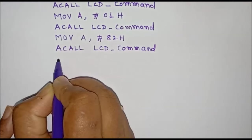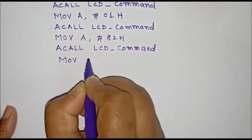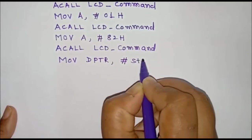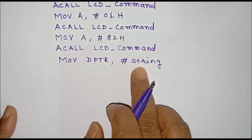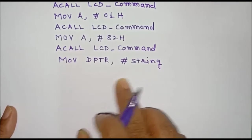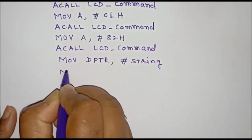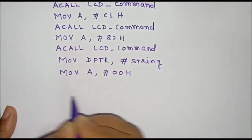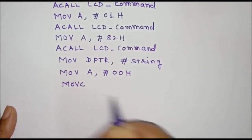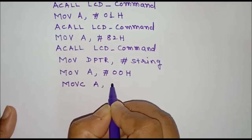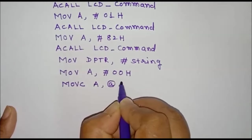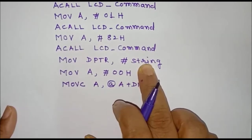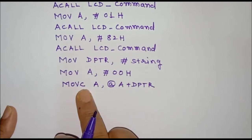To display the string, we first point the DPTR register to the string lookup table. We will give the lookup table the name 'string', so the address of the first character of the string lookup table is stored in the DPTR register. We then initialize the accumulator to 00H and use the MOVC instruction — move data from memory at A plus DPTR.